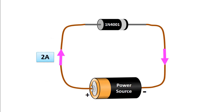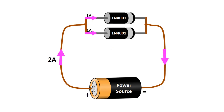Let's suppose that there is a current of 2 amperes in our circuit. When we connect the 1N401 diode to this circuit, it will be damaged, because the current it can resist is a maximum of 1 ampere. But let's say we don't have a diode that can resist 2 amperes. In this case, if we connect two 1N401 diodes in parallel, the main current of 2 amperes will be divided into 2 and will flow 1 ampere over each diode. So we can use the diodes without damage.